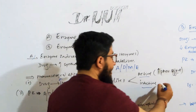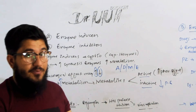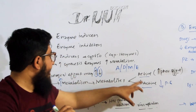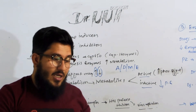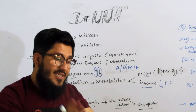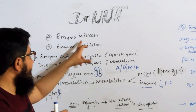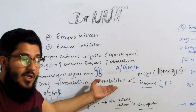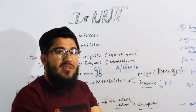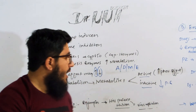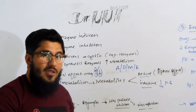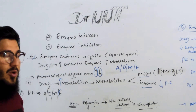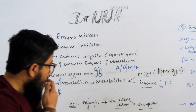In short, after metabolism, active or inactive metabolites are formed, and because of that the pharmacological effect is increased or decreased. After metabolism, the next step is elimination — absorption, distribution, metabolism, and elimination — so the drug gets eliminated. Let me give you an example to clarify this further.